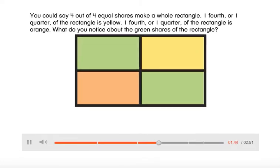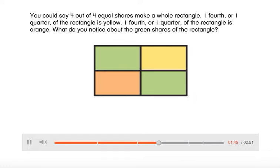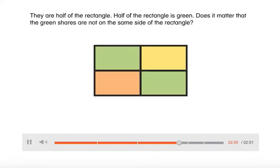You could say four out of four equal shares make a whole rectangle. One-fourth, or one-quarter, of the rectangle is yellow. One-fourth, or one-quarter, of the rectangle is orange. What do you notice about the green shares of the rectangle? They are half of the rectangle. Half of the rectangle is green.